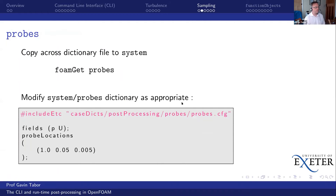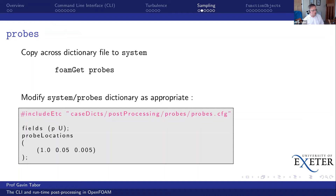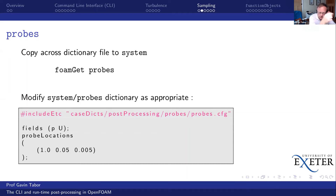I've set up this case to sample my flow. The origin is at the bottom of the step; the domain is 1.75 meters long, 0.1 meters tall, and 0.01 meters thick because it's one cell thick for the RANS case. I'll sample along a line at x equals 0.5 meters and a point at x equals 1 meter. There are command-line tools to do exactly this. Rather than typing a lot of information on the command line, we're going to use a dictionary file. For probing a particular location we use a function object called probes, and we need a dictionary file called probes. There's a very useful command called foamGet which looks in the installation and copies across appropriate files.